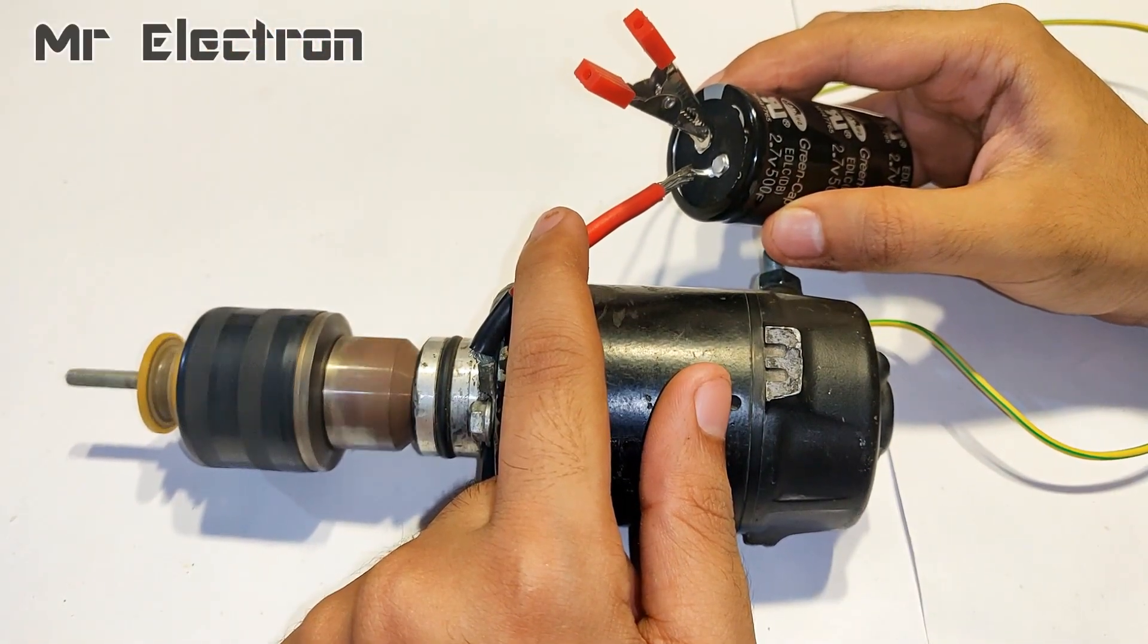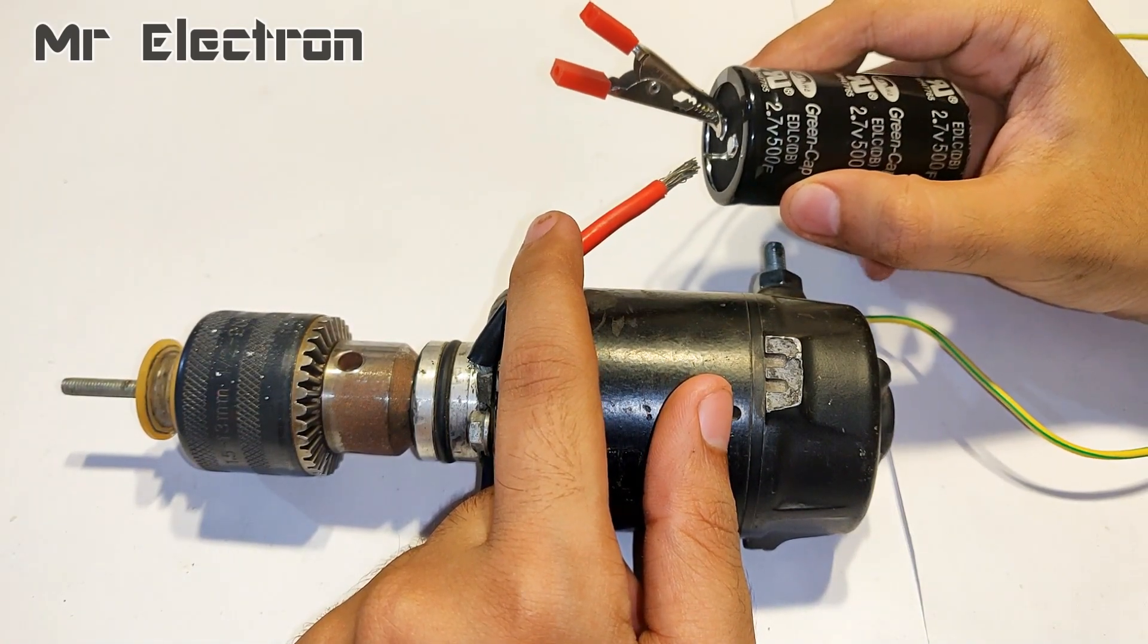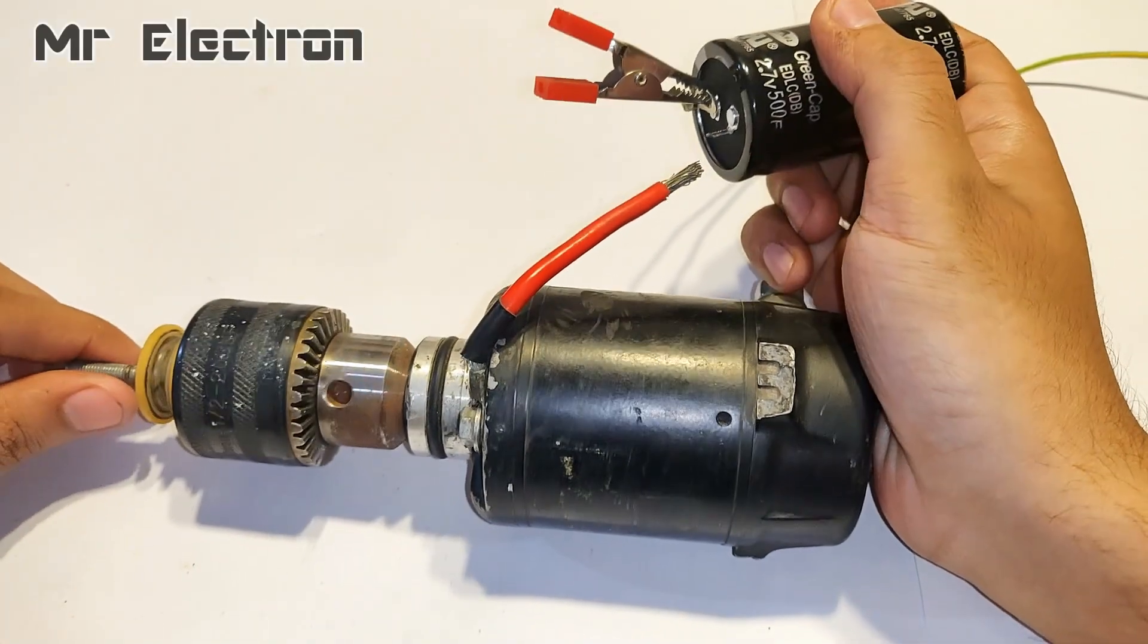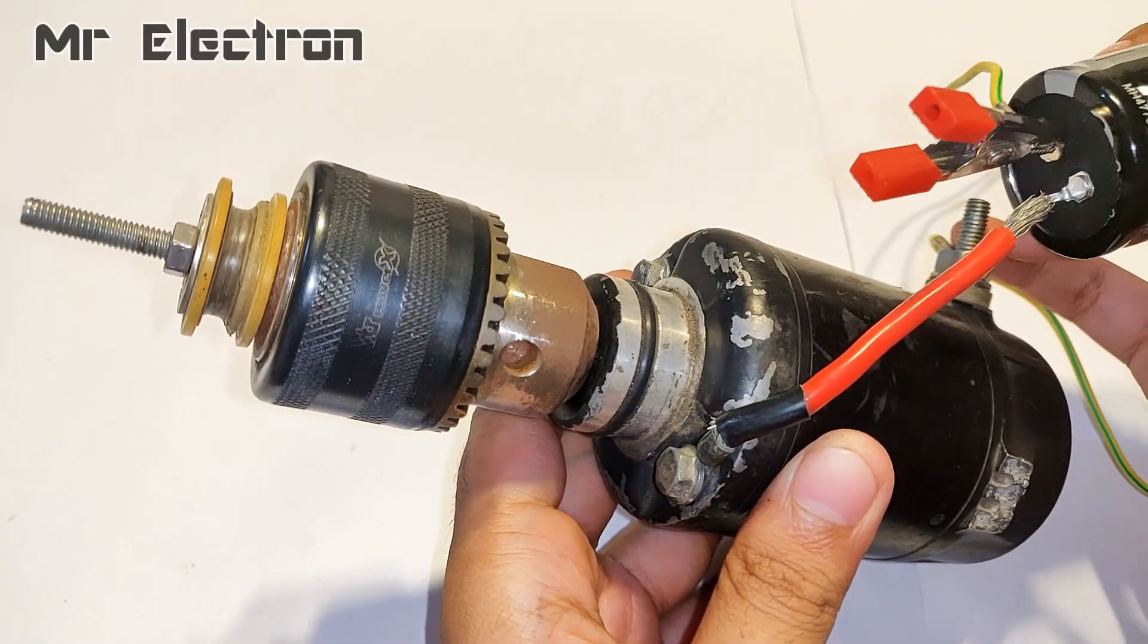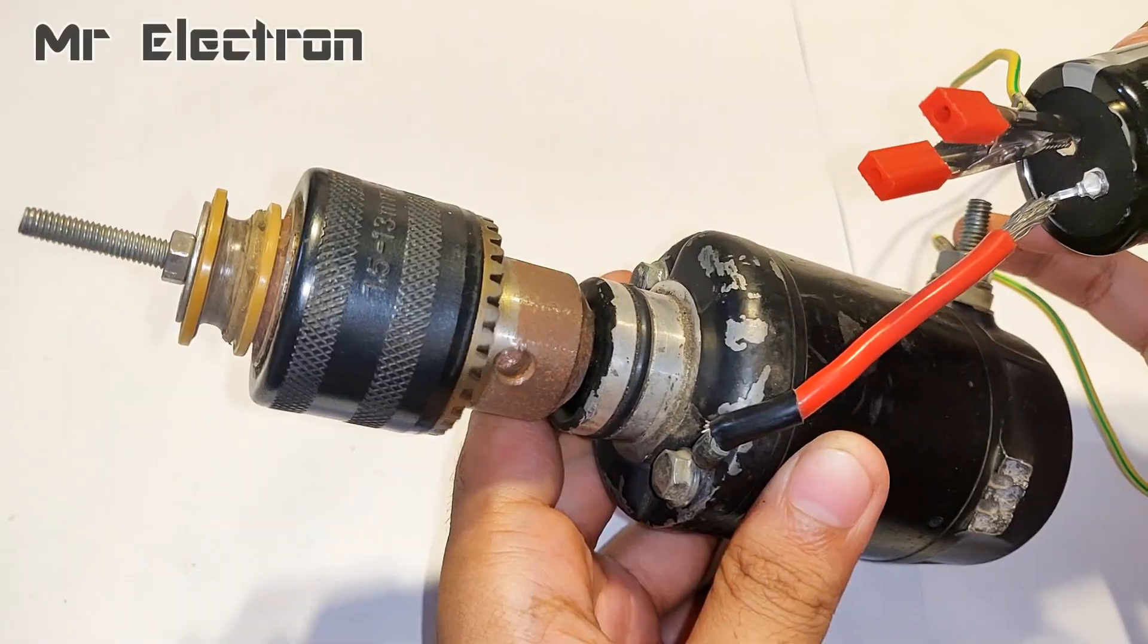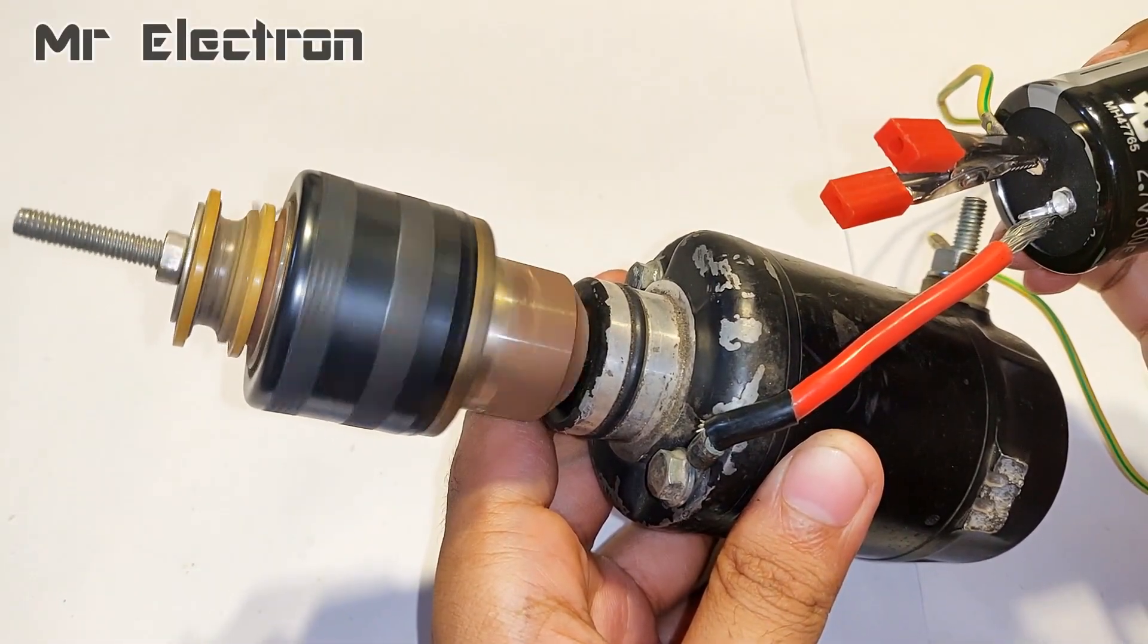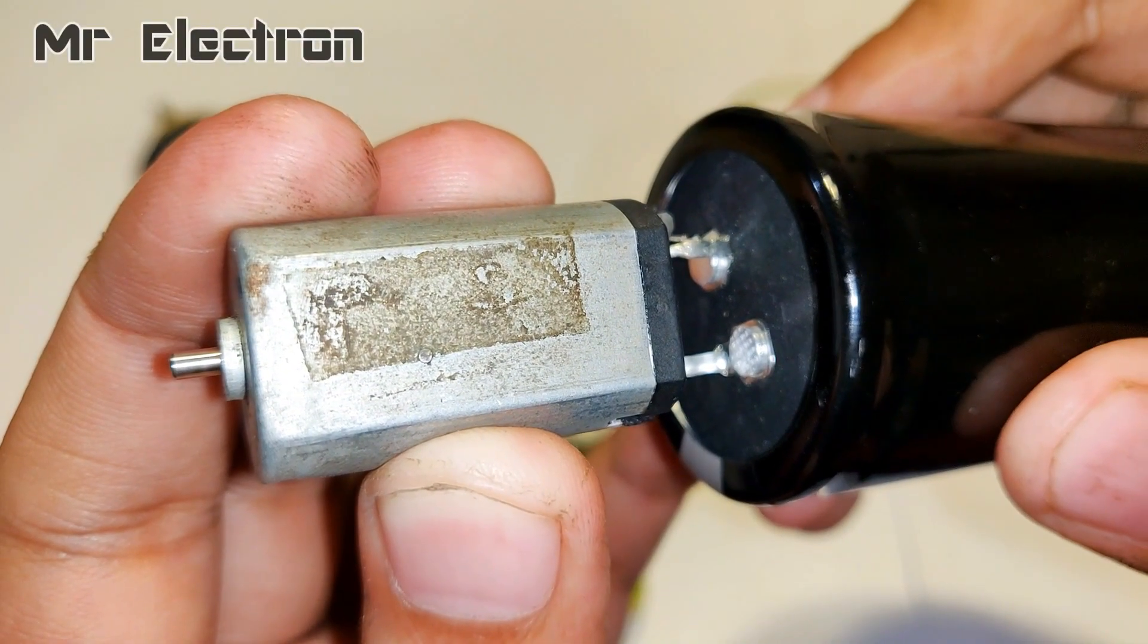As you can see at just 1.5V the starter motor is picking up current and running really fast. And more importantly the capacitor is discharging current enough to start the starter motor at 1.5V. And guys now I am pretty sure that if 5 of these capacitors are connected in series to create 12V then they would be enough to start or self start your bike engine.